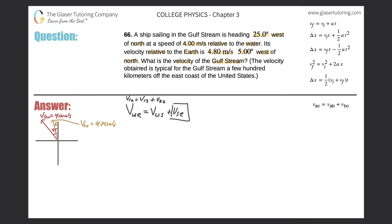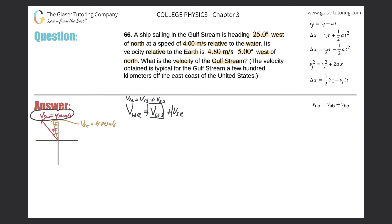Do we know the velocity of the ship relative to the earth? Yes, they told it to us. We can take that vector and break it into components. As for the velocity of the water relative to the ship — they gave us the velocity of the ship relative to the water, so we just need to negate all the values, because the velocity of AB equals negative the velocity of BA.